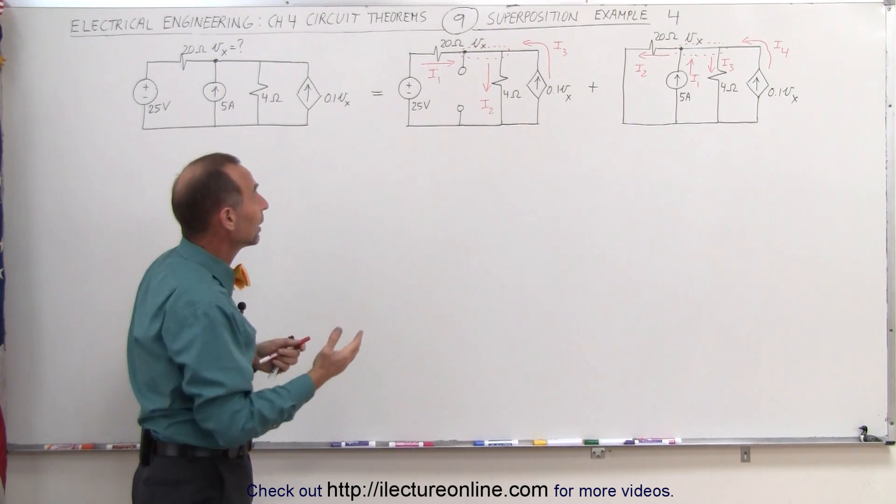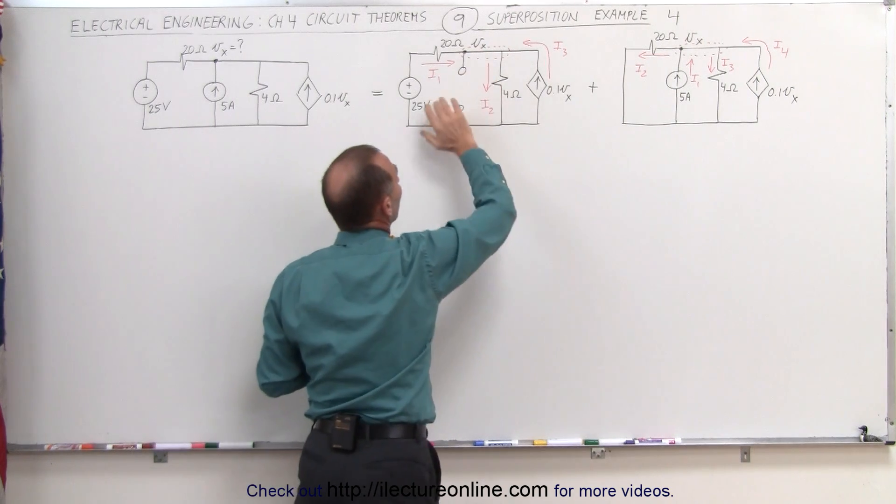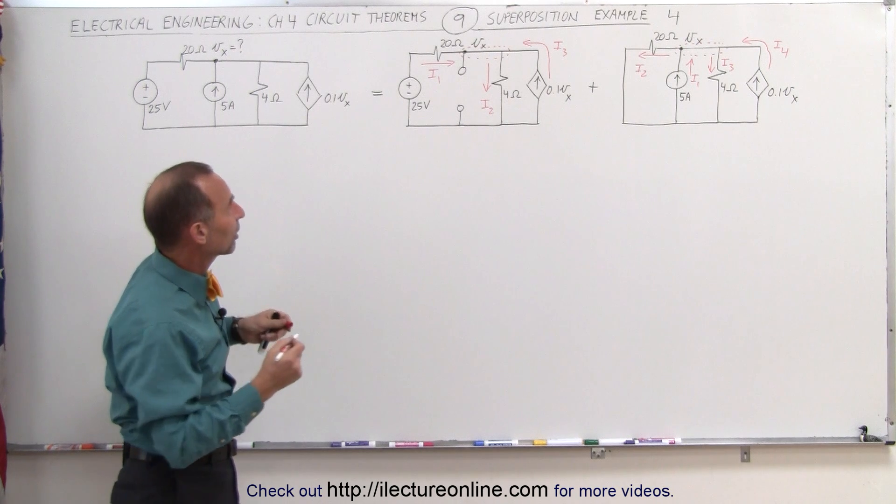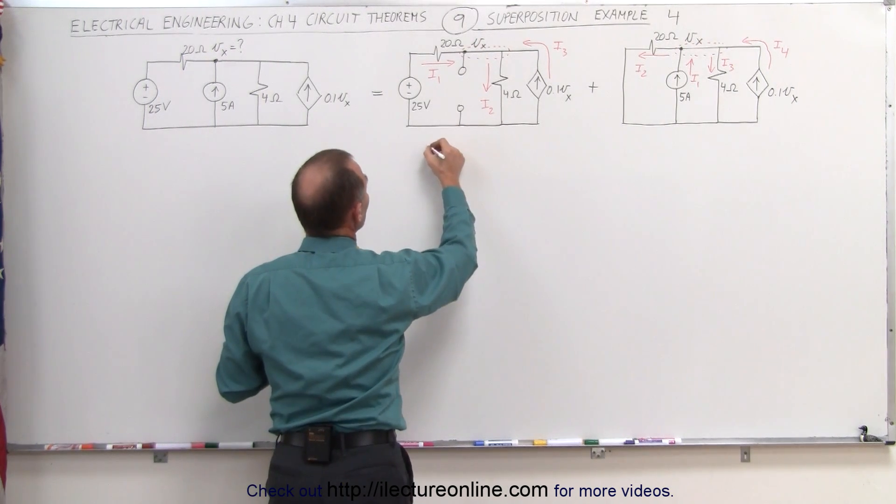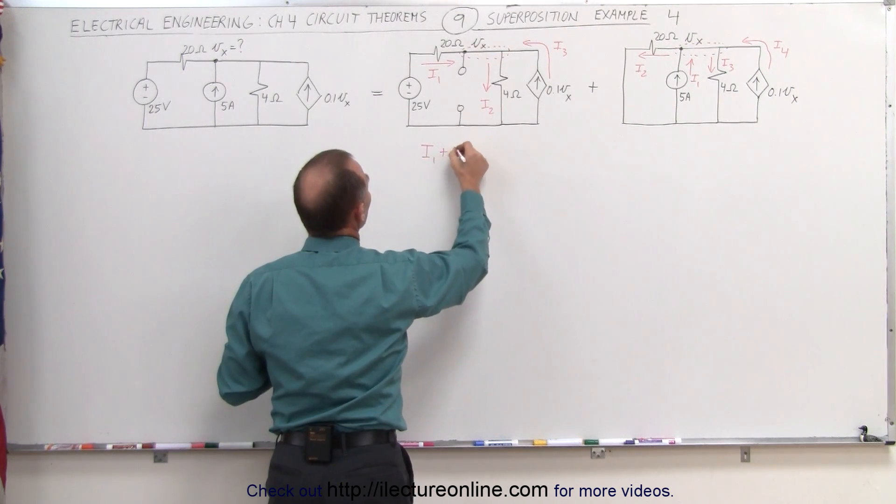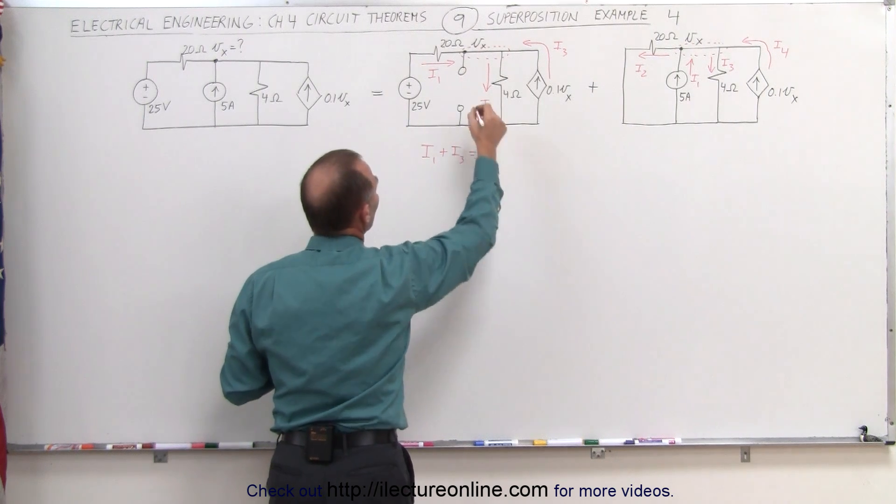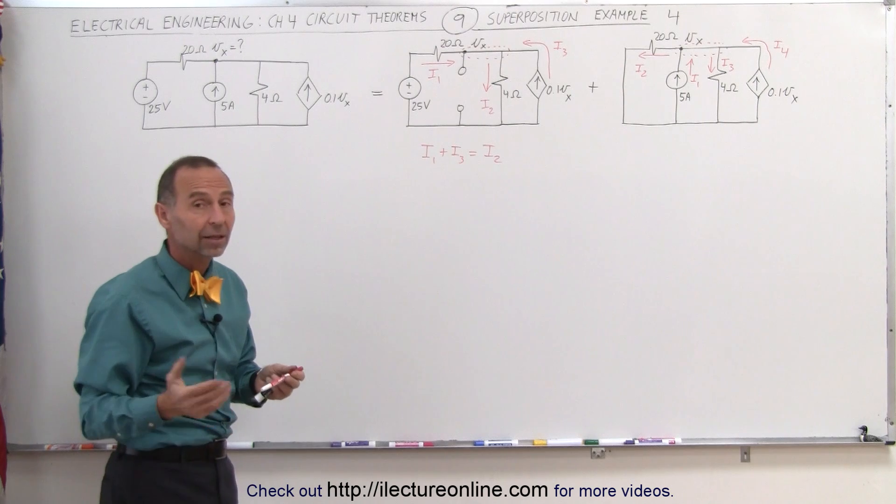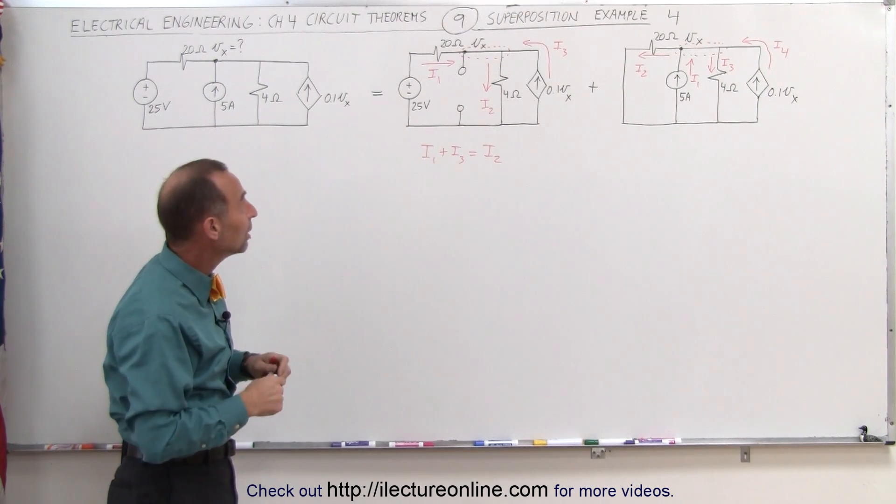Using Kirchhoff's rule, we can say that at the node here, we can add up all the currents entering the node and set that equal to all the currents leaving the node. Looks like we have two currents entering, we have I1 plus I3 entering, and we have I2 leaving the node. Now let's go ahead and calculate what each of those are.